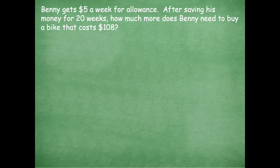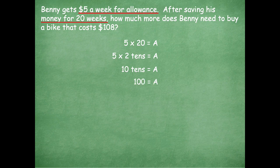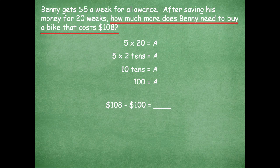All right, friends, make sure to pause if you need more time. Here we go. We know he got $5 a week for 20 weeks, so step one is 5 times 20. If that's too much, remember you can say 5 times 2 tens, which is 10 tens. I know that 10 tens equals 100. That's my first part. Now, how much more money does he need to buy that bike that costs $108? He's earned $100, so I subtract to find the difference: $108 minus $100 equals $8. Benny only needs $8 more to buy the bike. If you didn't get that, just rewind and rewatch how I solved this problem.